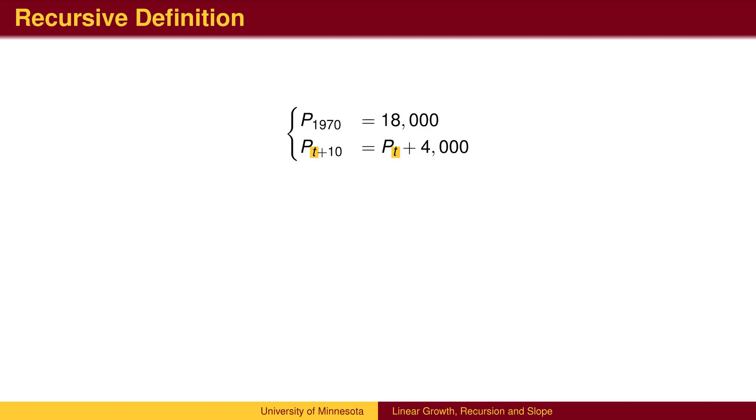The subscript variable, in this case t for time, is called the independent variable, and will be measured on the horizontal axis in the graph.